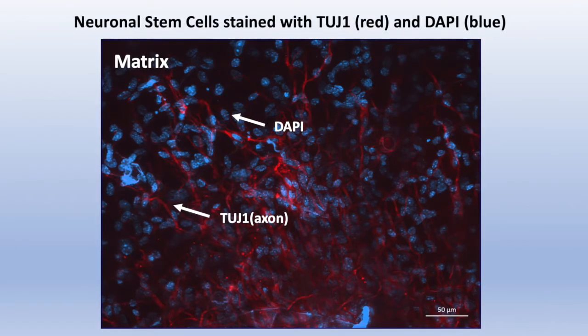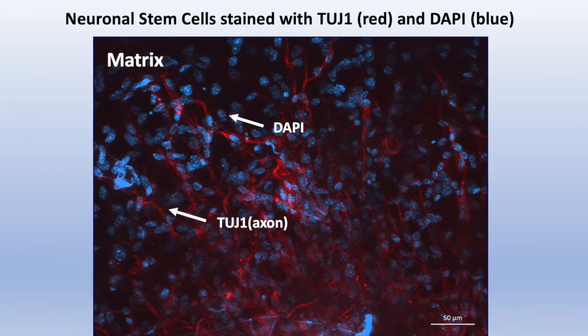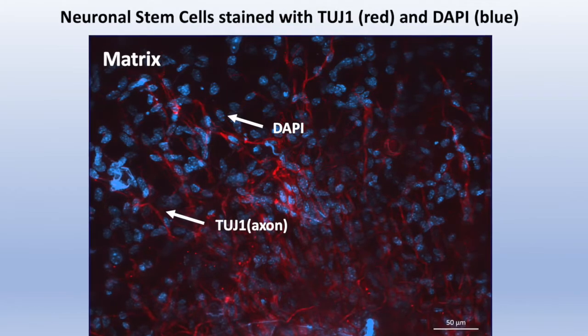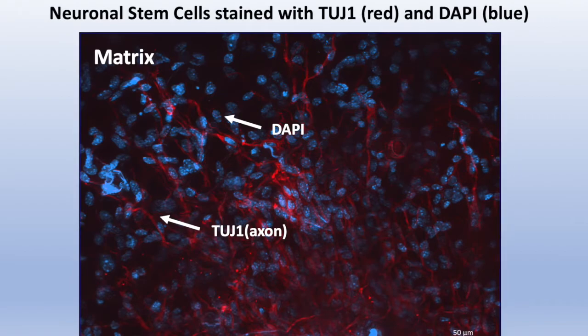Then neuronal stem cells were cultivated on our scaffolds. After 7 days they differentiated into neurons and we immunocytochemically detected them with a special neuronal marker for beta-tubulin.